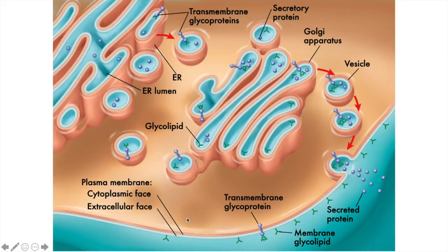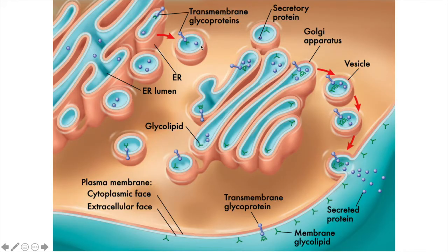Remember that blue is outside the cell membrane and pink or orange is the cytoplasmic face of the membrane. What's happening here is that the ER is making some biomolecules — some for export and some for transmembrane glycoproteins. Vesicles are transporting the products from the ER to the cis face of the Golgi apparatus, and you can see some modification occurring to the transmembrane glycoproteins.